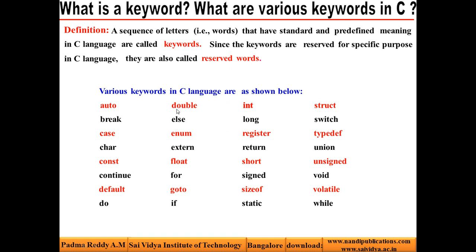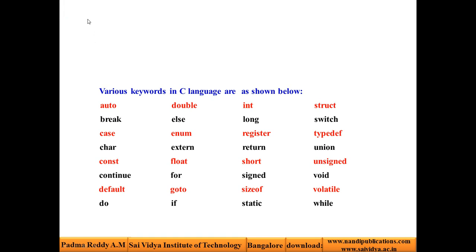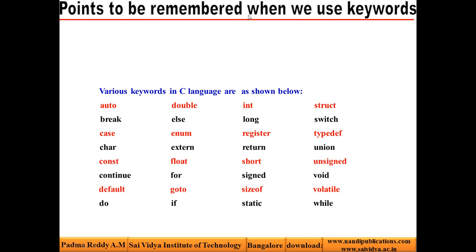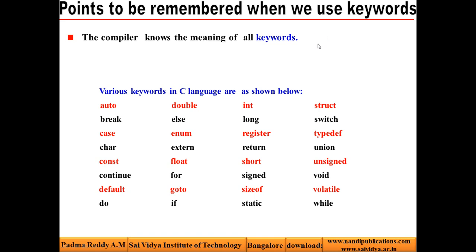The meaning of each keyword and the explanation of each keyword is given in the coming sections. Now let us see some of the points we have to remember when we use keywords. Point number 1: the compiler knows the meaning of all keywords. For example, if I write int, the compiler knows that we are manipulating integer data. If we write float, the compiler knows that we are manipulating floating point data.